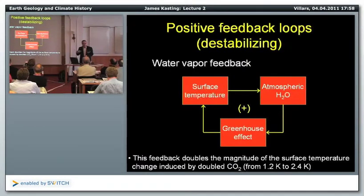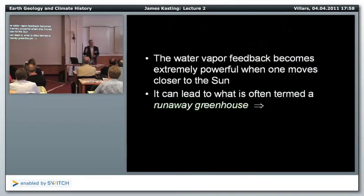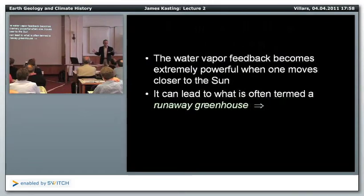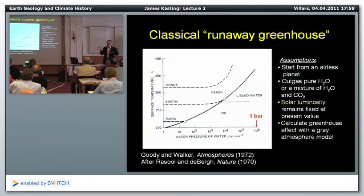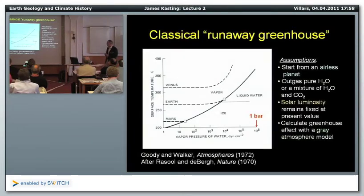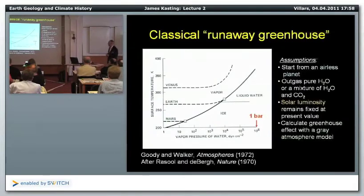The climate system has negative feedback loops too, so the water vapor feedback doesn't destabilize it under normal conditions. But if you move the planet much closer to the sun, it can destabilize the climate system — that's what we call the runaway greenhouse effect, which is basically what we think happened on Venus. This is the classical runaway greenhouse from calculations published in 1969 by Rasool and DeBerg, but I prefer a figure from a little book by Richard Goody and Jim Walker published three years later.